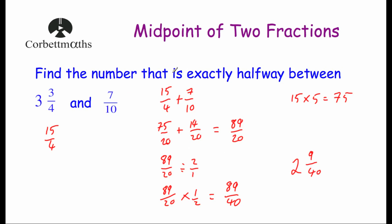Let's write that as a mixed number. Forty goes into eighty-nine twice — that's eighty — with a remainder of nine, so nine over forty. The number exactly halfway between three and three-quarters and seven-tenths is two and nine-fortieths. To find the midpoint of two fractions, add the two fractions together and then divide by two.